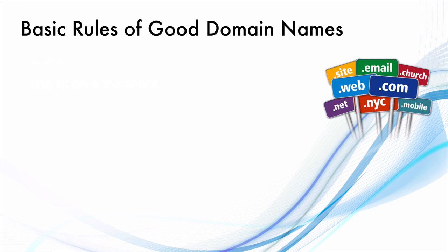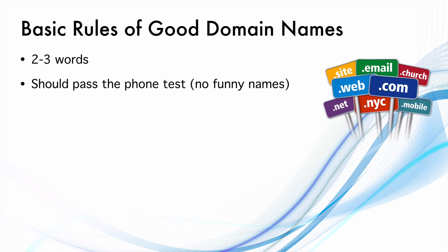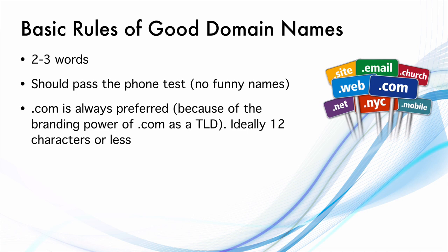Let's talk about some basic rules of good domain names. A good domain name should not be more than two to three words — for example, Digital Deepak is two words. There are big brands built on three words, like thelogicalindian.com, but you usually don't see big brands built on four words. There is something called the phone test: if you tell the domain name to someone on the phone, they should not ask you to spell it out. They should just be able to type it on their browser and open the website. .com is always preferred because of the branding power of .com as a TLD — more than 50% of websites in the world are built on .com. Ideally, the domain name should also be 12 characters or less.